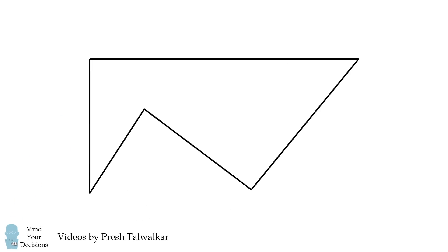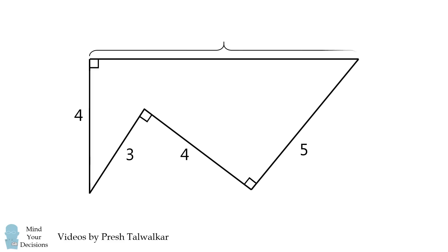Here's a fun problem I found online. This unusual shape has three right angles as marked. Also, its side lengths are 4, 3, 4, and 5. The question is, what is the value of the last side's length, which is marked as X in the diagram?